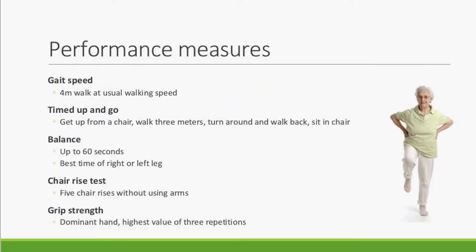In the comprehensive cohort we have five performance tests. Gait speed: a four-meter walk at usual walking speed, calculated in meters per second. The timed up and go test: participants get up from a chair, walk three meters, turn around, walk back, and sit down. A balance test: participants balance on each leg up to 60 seconds, or until the other foot hits the floor or they use the wall — we used the best time from either leg. The chair rise test: getting up and down from a chair five times without using arms. And grip strength: measured in the dominant hand using a hand grip dynamometer, using the highest value from three repetitions.